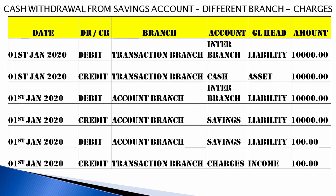For cash withdrawal from a savings bank account at a different branch where charges apply, same principle: credit the asset to decrease the balance and debit the savings bank account to reduce the balance. Inter-branch accounts are debited and credited. Additionally, charges are taken from the savings bank account — savings bank liability is debited 100 rupees and income is credited 100 rupees.